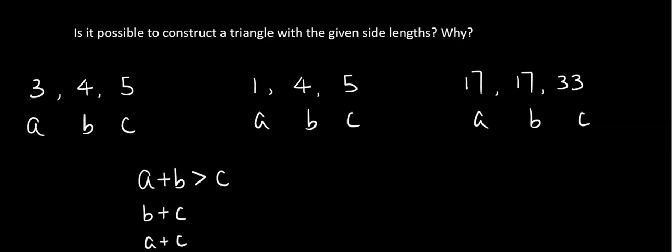So the sum of A and B is greater than C, and B plus C is greater than A, A plus C is greater than B. Another rule, the difference of two sides must be less than the third side.